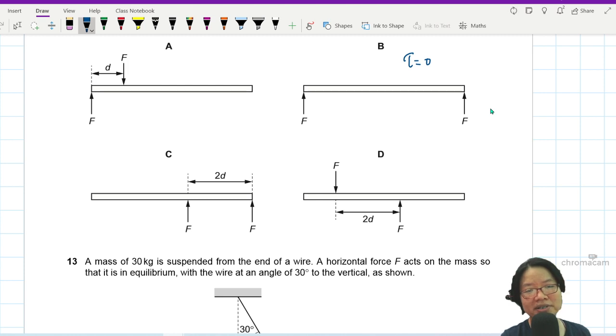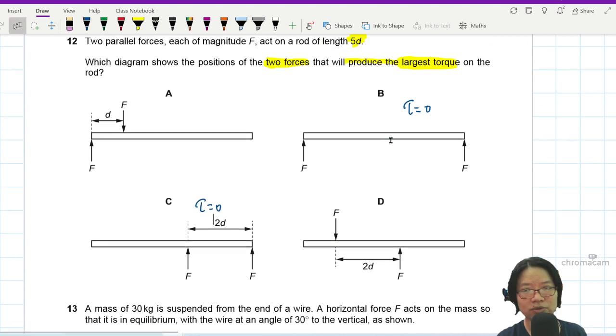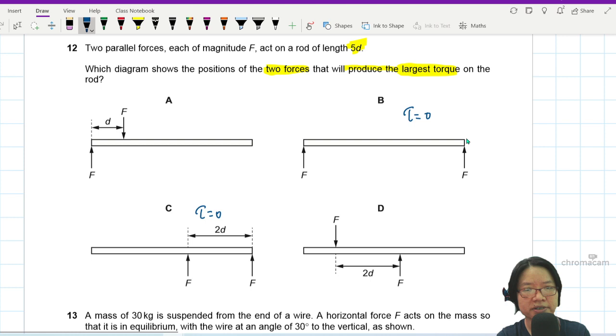In this case as well, depending on where you hinge the thing, but because they are not in opposite direction, your torque is zero. So if you want the largest torque, we are looking at a couple. This one is not a couple.